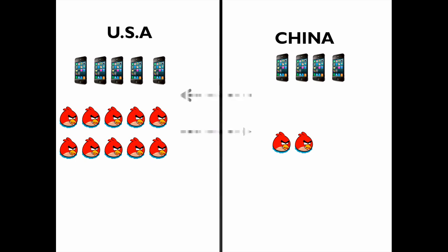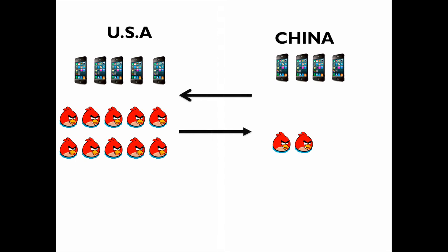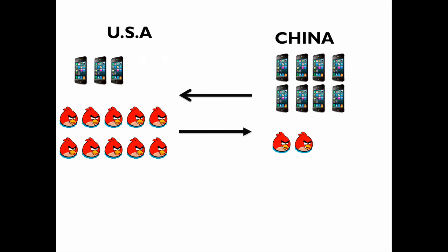Now we open it to trade, and now they don't have to produce the same thing — they can produce something different and then trade with each other. The goal is that each country wants to be able to consume more than they were consuming with no trade. So the US can decide to produce only three iPhones, and China produces most of the iPhones — six iPhones. Then the US produces all of the Angry Birds and China produces none.